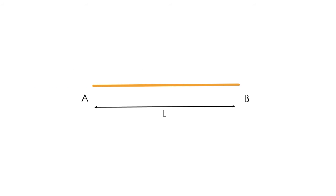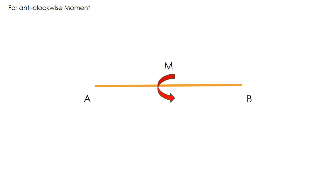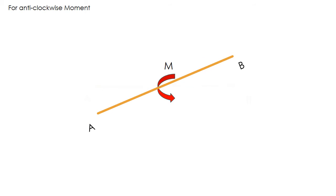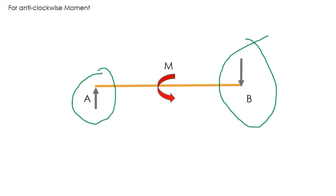Assume I have a beam AB of span L, on which a moment is acting in an anti-clockwise direction. There will be reactions that develop to maintain a stable equilibrium, to avoid the tilting of the beam. And these two forces become our support reactions at A and B.